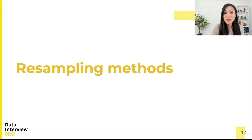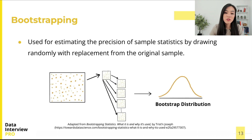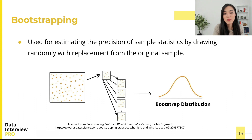Now let's discuss some commonly used resampling methods. There are a variety of resampling methods, and we'll focus on the two most commonly used in practice: bootstrapping and permutation tests. The first method is bootstrapping, which is used for estimating the precision of sample statistics by drawing randomly with replacement from the original sample.